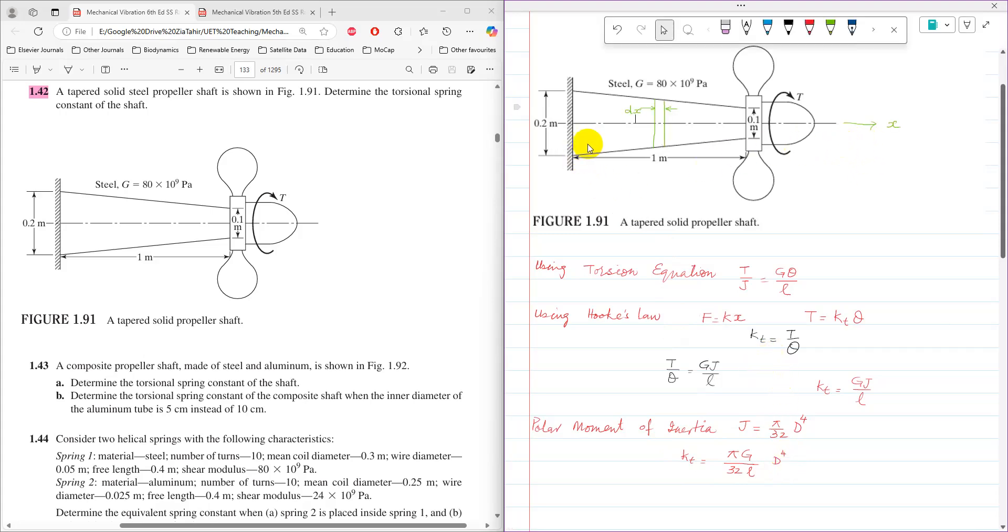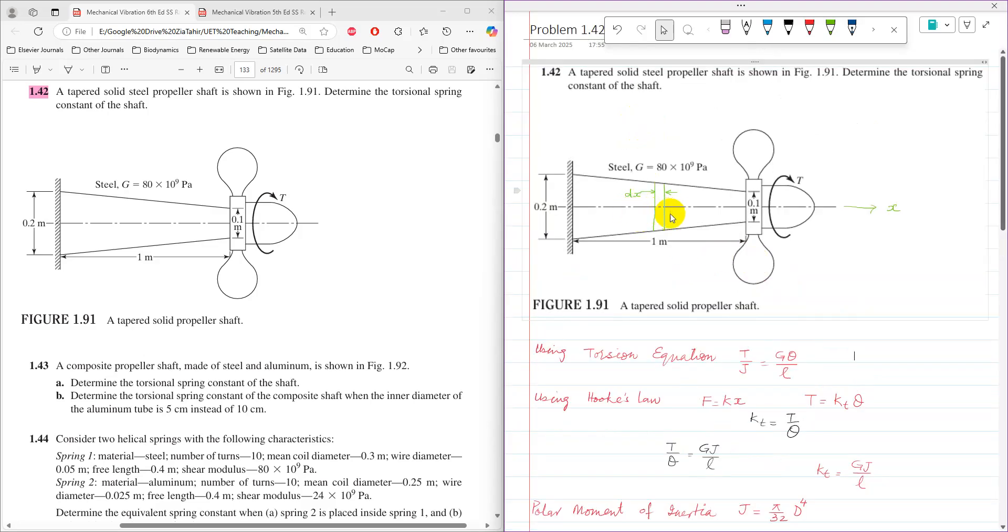So for this case, the horizontal axis or length is assumed in X direction, so a strip is taken with length of DX. Now, for this specific case, the diameter depends.